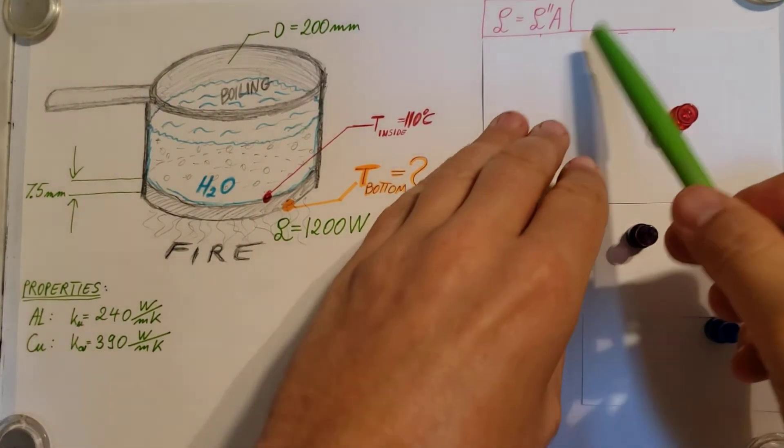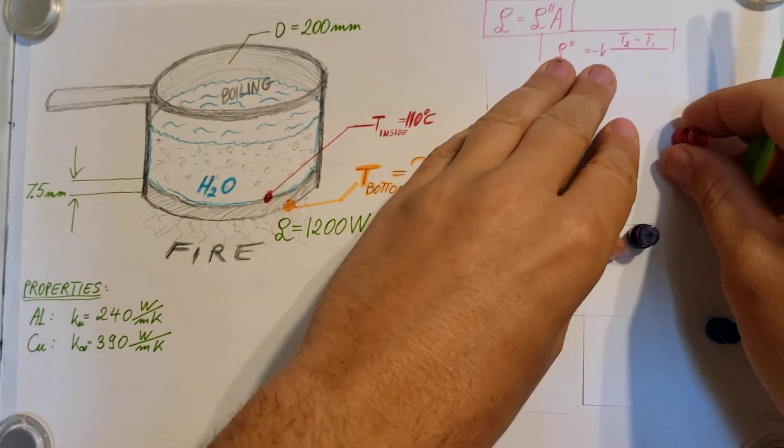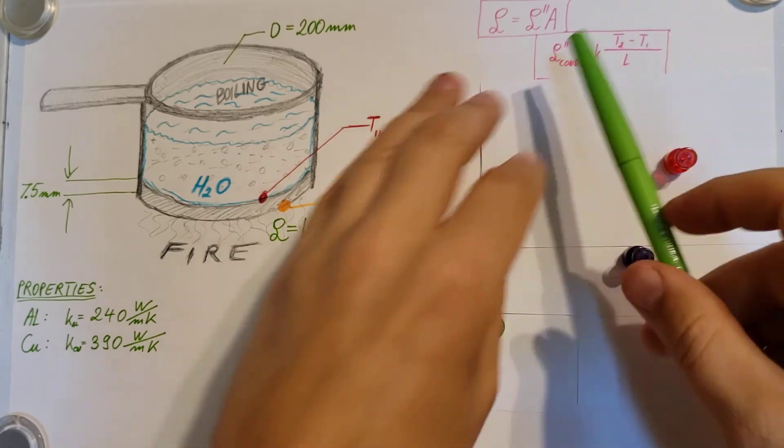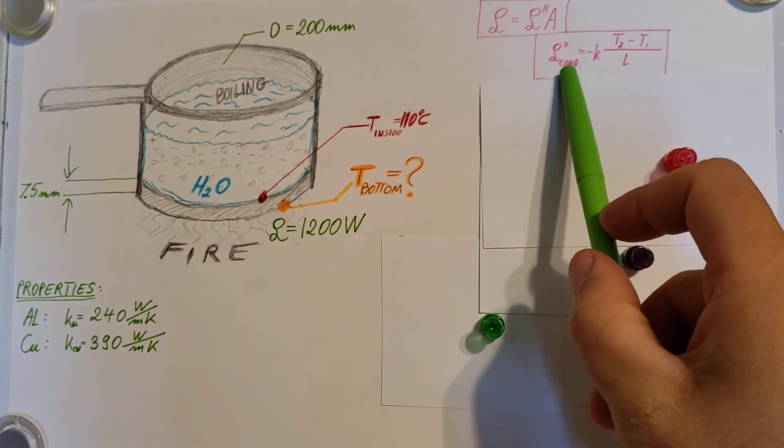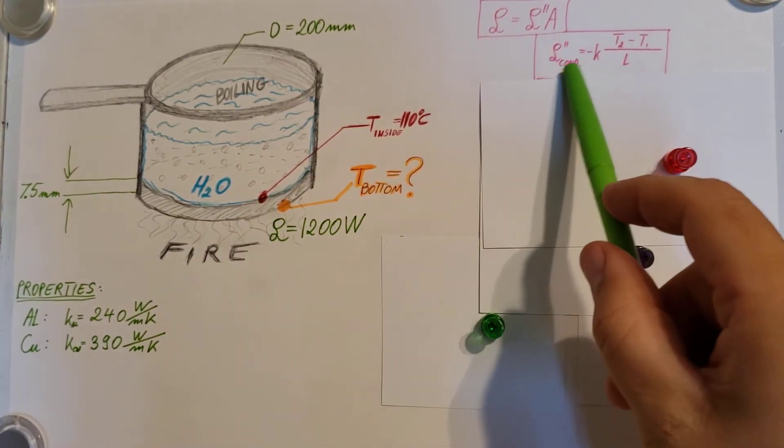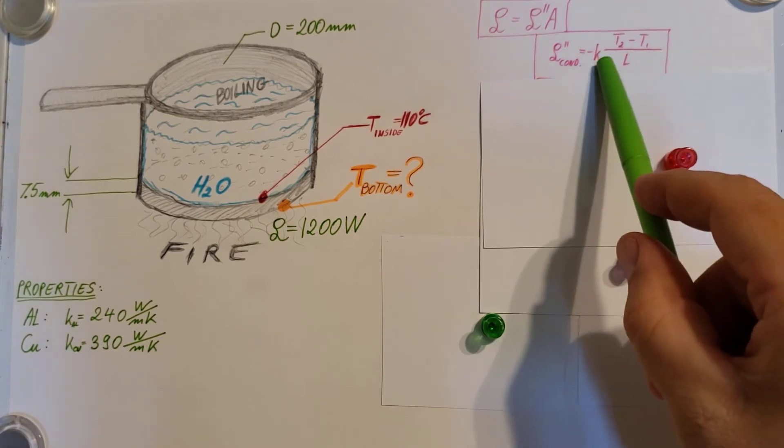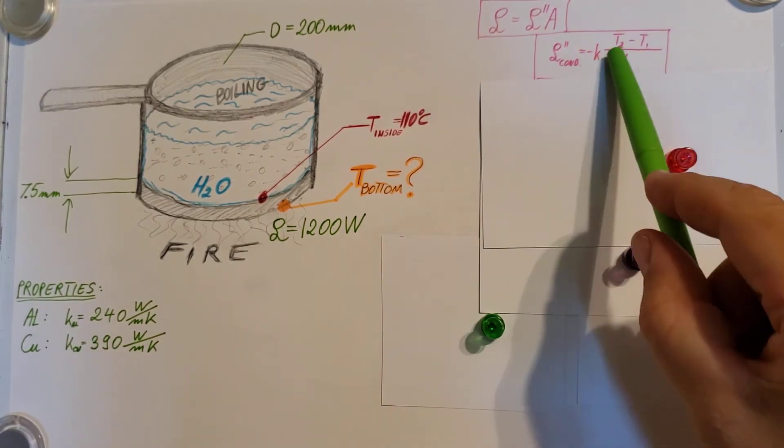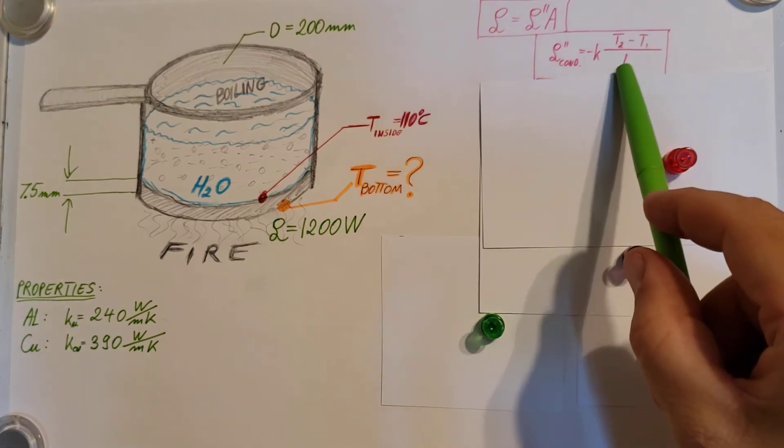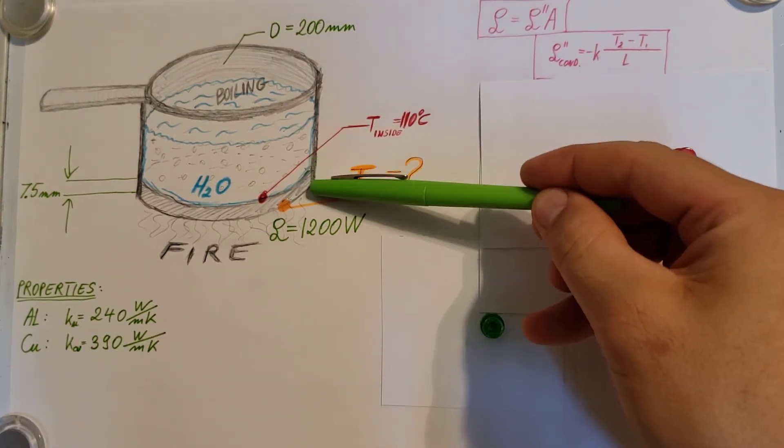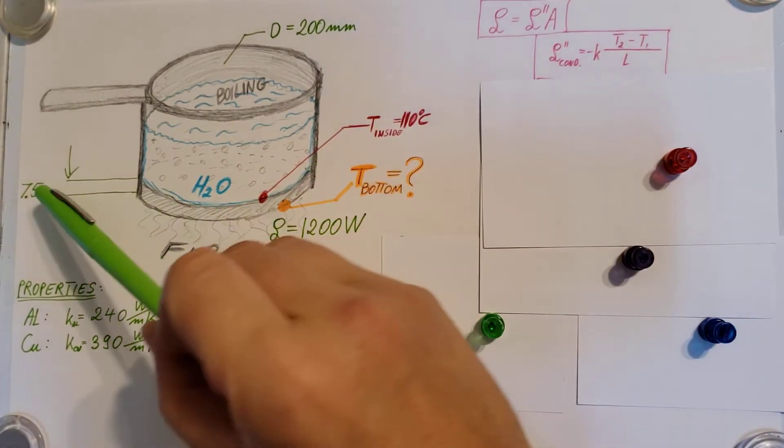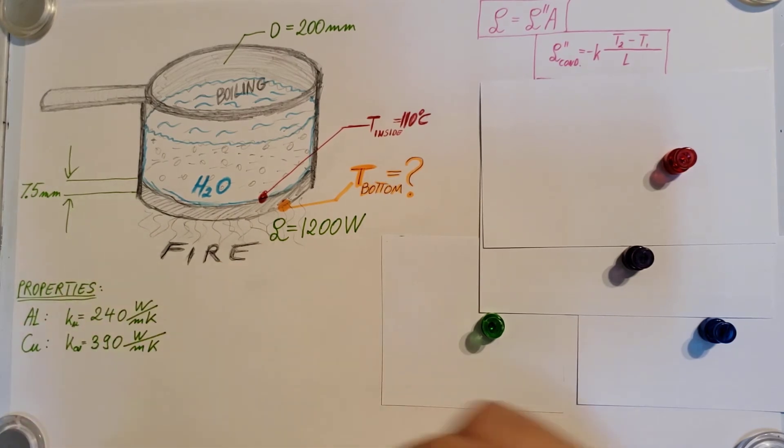I'm going to write up our formula for the flux of conduction. There's the formula: Q double prime equals negative K times T2 minus T1 over L. L is going to be the thickness of our pan, 7.5 millimeters.